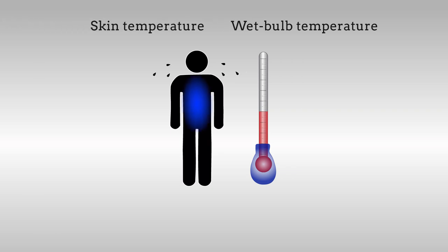Sweating helps us maintain a skin temperature equal to the wet bulb temperature, ideally below our core body temperature of about 37 degrees Celsius.